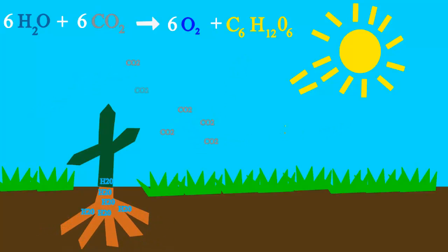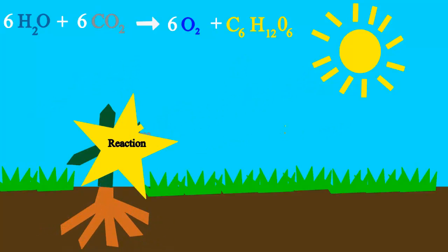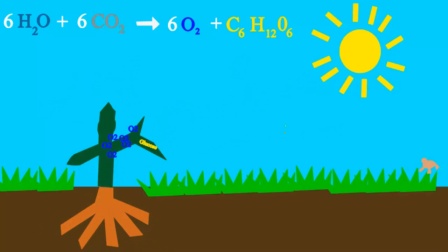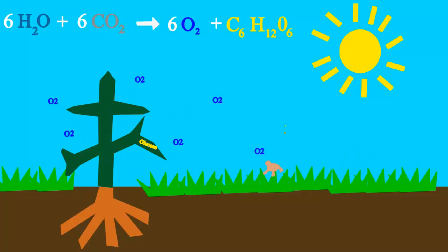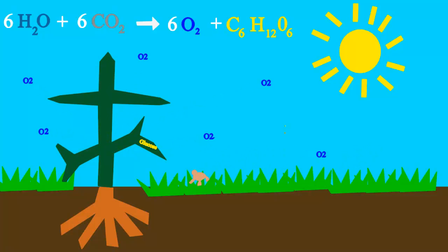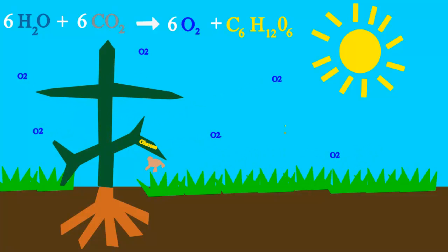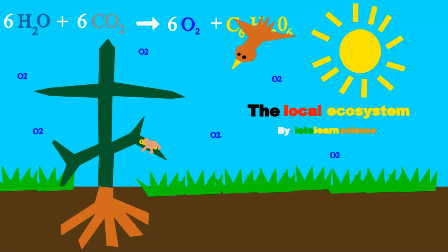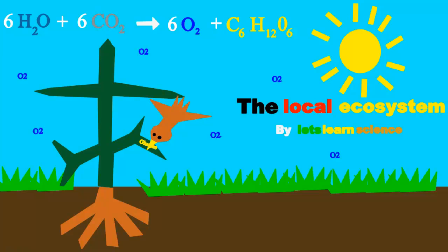Plants take water, sun and CO2 to make glucose, the sugar that they use for food. They also put oxygen into the air so we can share, because oxygen is everywhere.